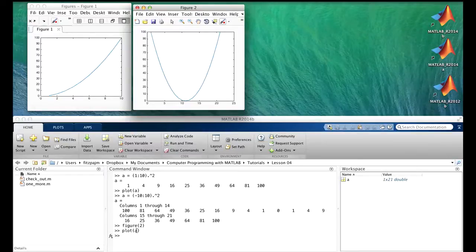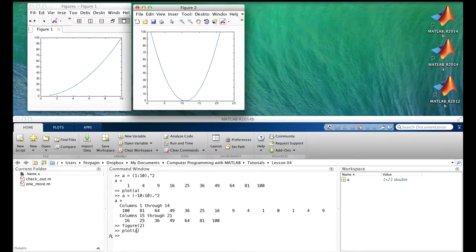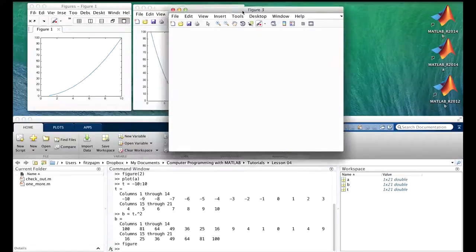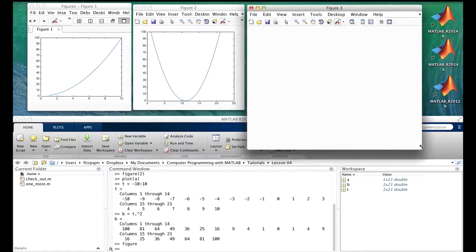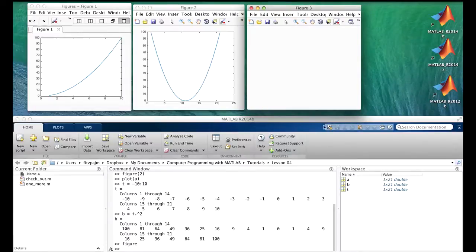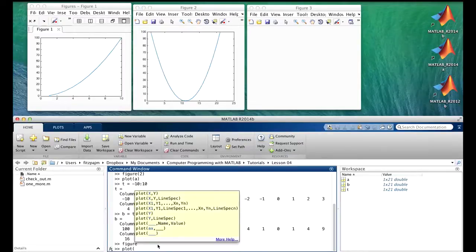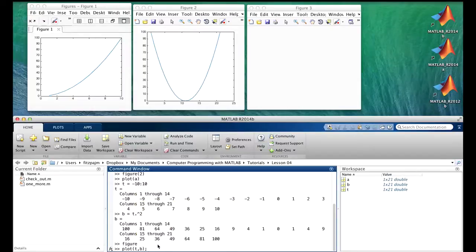To properly plot a mathematical function like this, we need to pass two vectors of the same length, one with the x values and one with the y values. Let's do that. T is going to be my x values, and b will be my y values. So t goes from minus 10 to 10, and b is just the squares of those numbers. So let's get a new figure window, and let's move it over here, size it the same as the others. And this time we're going to plot with two arguments.